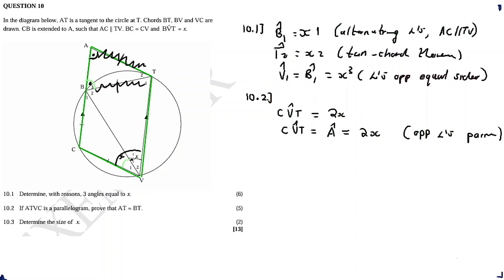I see another pattern. I need to calculate B3. I'm highlighting a cyclic quadrilateral. To calculate an unknown angle in Euclidean geometry, use the known values. We know x, and I also have x here.